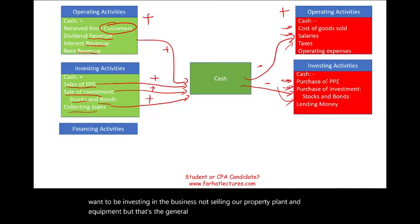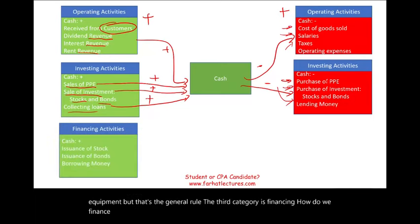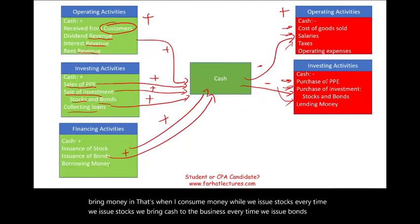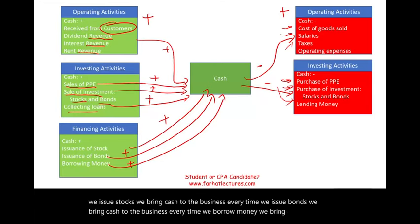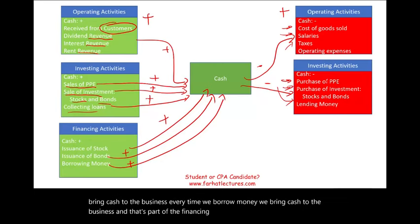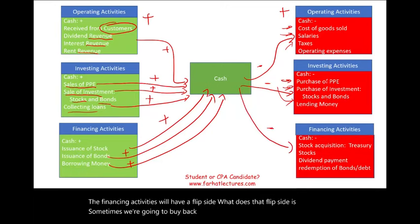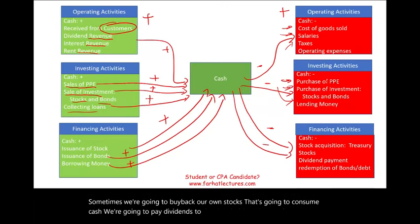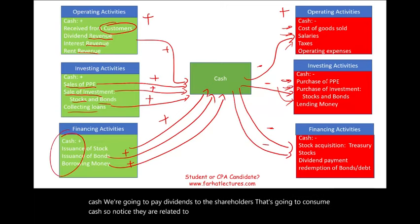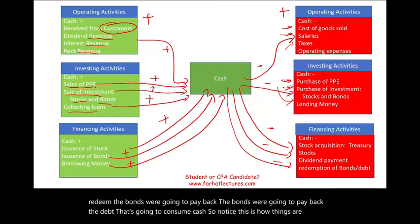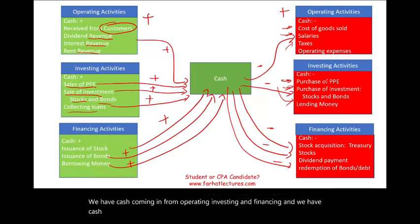The third category is financing. We're going to have two sides: one that brings money and one that consumes money. Every time we issue stocks, issue bonds, or borrow money, we bring cash to the business. The flip side is that sometimes we buy back our own stocks, pay dividends to shareholders, redeem a bond, or pay back the debt — all of which consume cash. So we have cash coming in and cash consumed by all three sections: operating, investing, and financing.